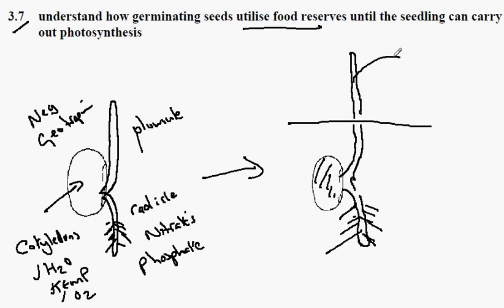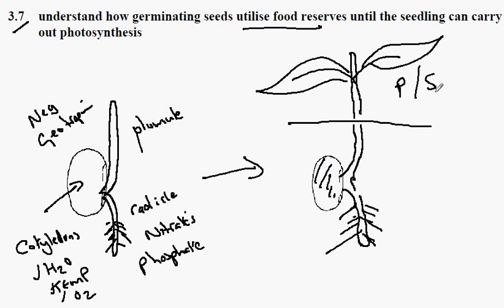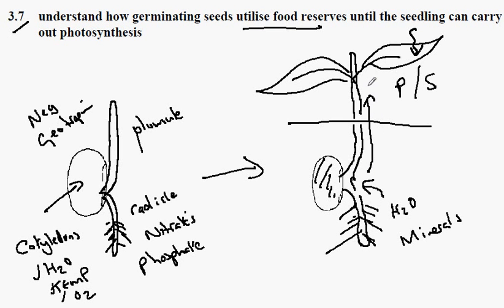The food store is used up to promote this growth until the seedling gets up into the air, at which point it can start to produce its first leaves, and of course then photosynthesis can occur. It will absorb light, water and minerals go in through the root system, up through the stem and out to the leaf, and so the plant can then promote its own growth through photosynthesis.